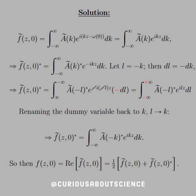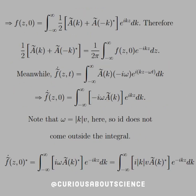Renaming the dummy variable back to k, we see that the complex conjugate is equal to a-tilde of negative k starred, again in this forward-transform-looking form. So then, f(z,0) is equal to the real part of f-tilde(z,0), which is one half of f-tilde(z) plus f-tilde(z) conjugate, both at t=0. Adding them together in the integrals, we get one half and then the complex amplitudes added together in that bracket. Therefore, what we need to show is that the one half with the complex amplitudes is equal to the 1 over 2π inverse transform.